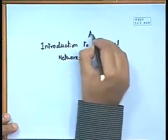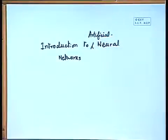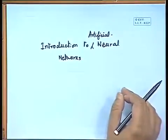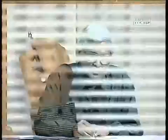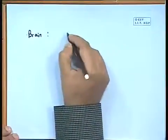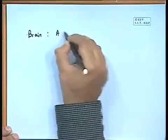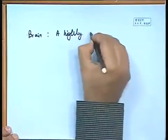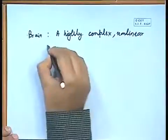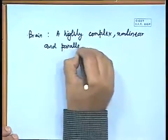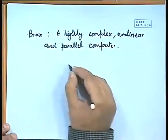We are going to address the introduction to artificial neural networks. Whenever I say 'artificial,' the question that immediately comes to mind is: what is then the natural neural network? We know that our brain — the human brain — is a highly complex, non-linear, parallel computer. The human brain can organize its constituent structural elements.